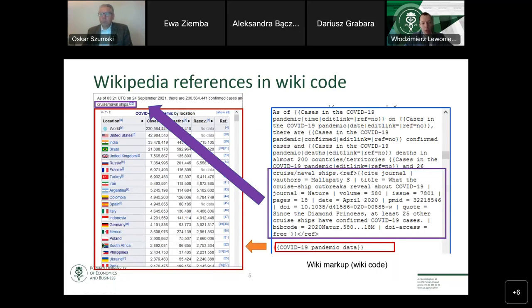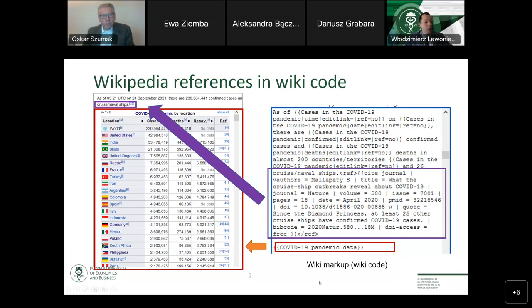A few words about how Wikipedia articles are created and how users insert references. Here you see an example of a table in a Wikipedia article about the COVID-19 pandemic. On the left side you can see what the Wikipedia reader sees when entering the article; on the right side you can see the wiki code. Users often use wiki code to write articles, though there are also other possibilities such as a visual editor, similar to Microsoft Word. References can be inserted using a special ref tag, similar to HTML code.